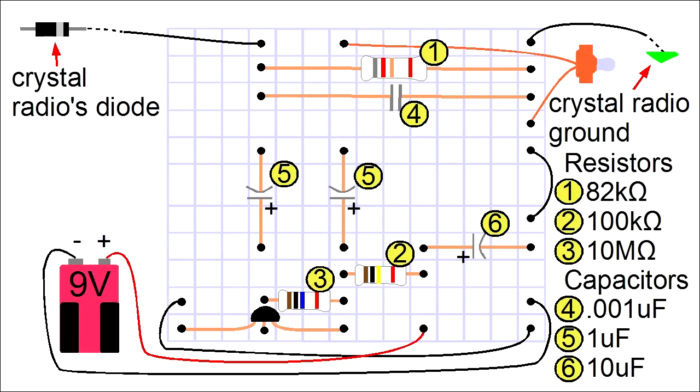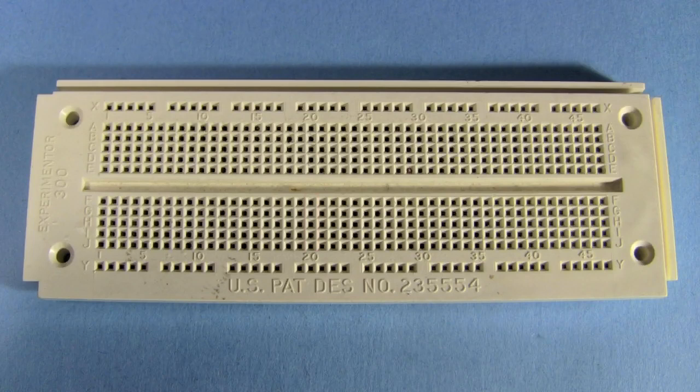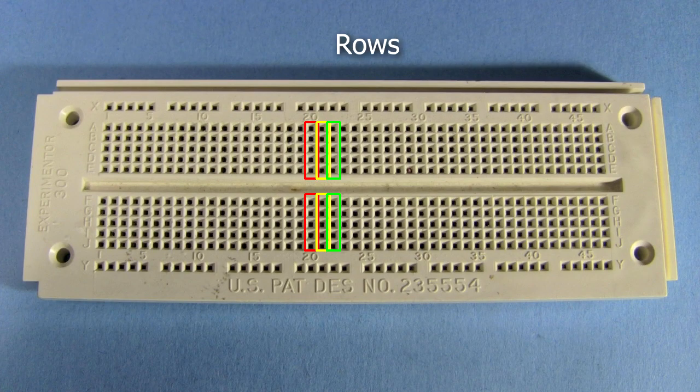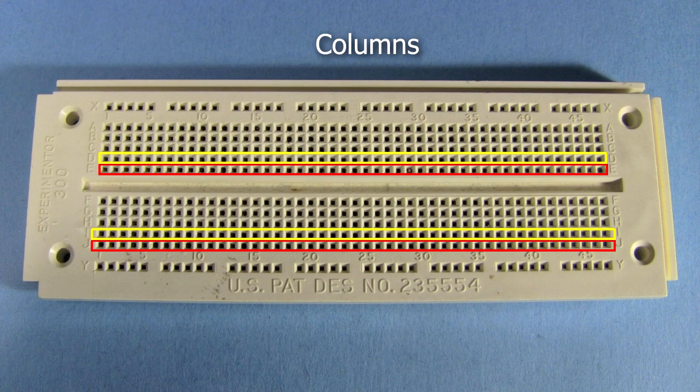Of course we'll still need a diagram, so I've made this useful one to follow. And just so we're using the same terminology, on a breadboard these are called rows. The other direction are called columns.